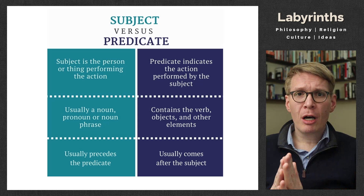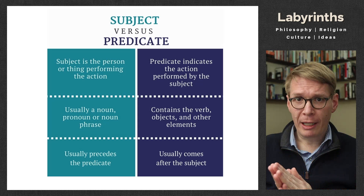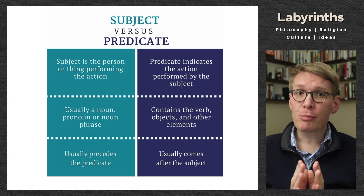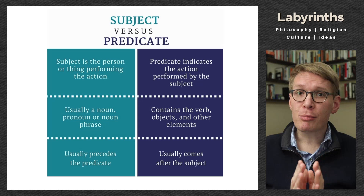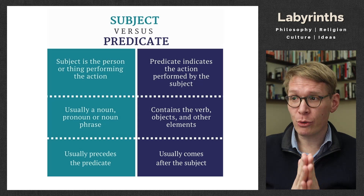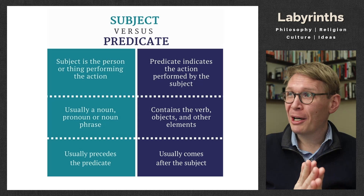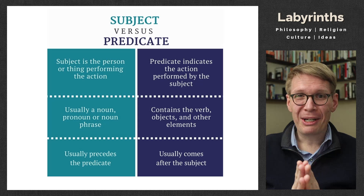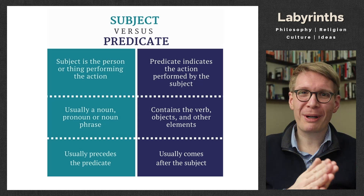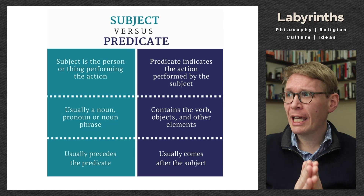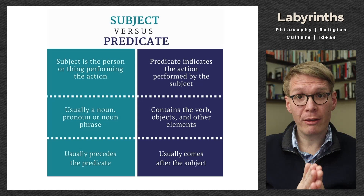There's a more fundamental distinction we can make: between subject and predicate. The verb and the object together give you more information about the subject — you are predicating something of the subject, attributing something to it. The subject is the person or thing performing the action, usually a noun, sometimes a pronoun or noun phrase, and it usually comes before the predicate. But if you talk like Yoda, you might reverse subject and predicate. The predicate indicates the action performed by the subject; it contains the verb, but also everything else in the sentence — everything you are claiming about that subject.